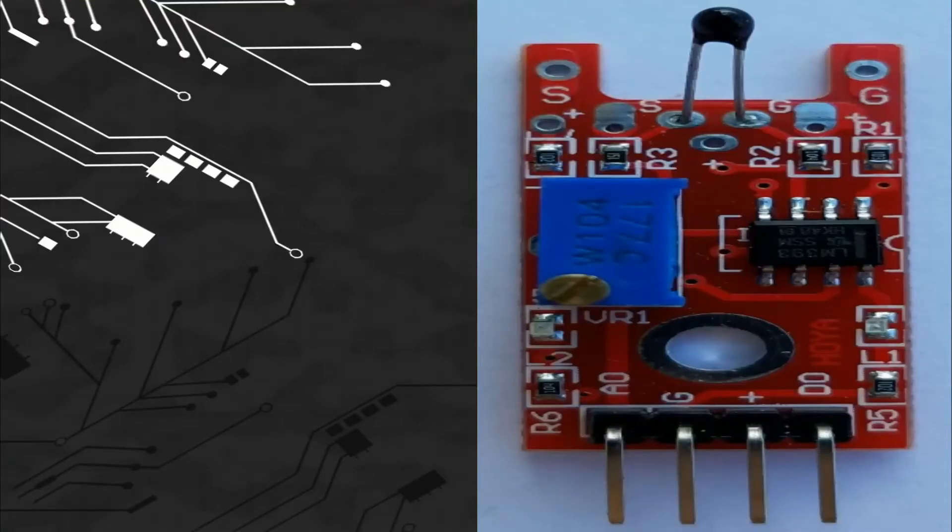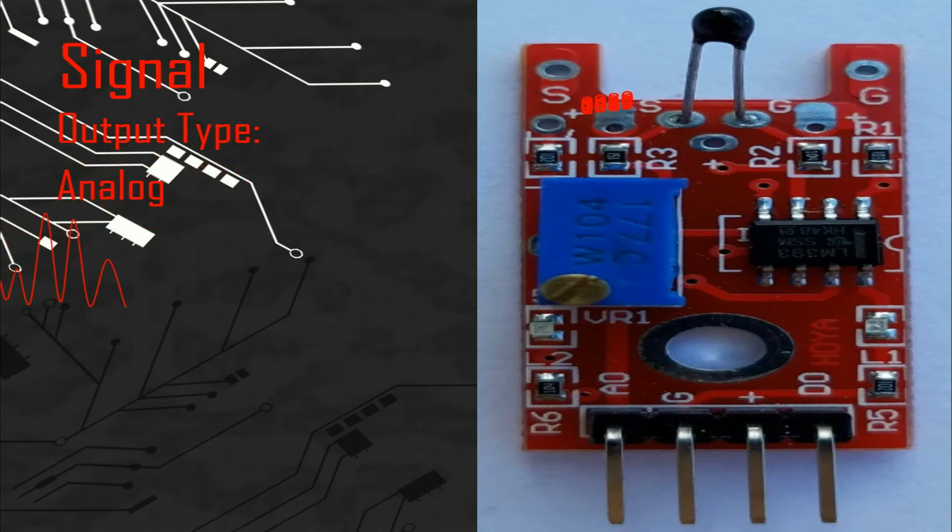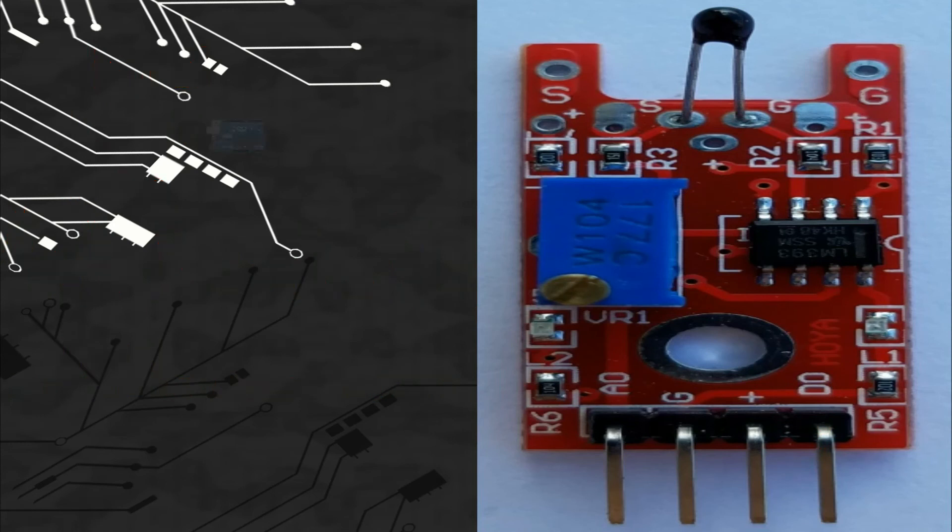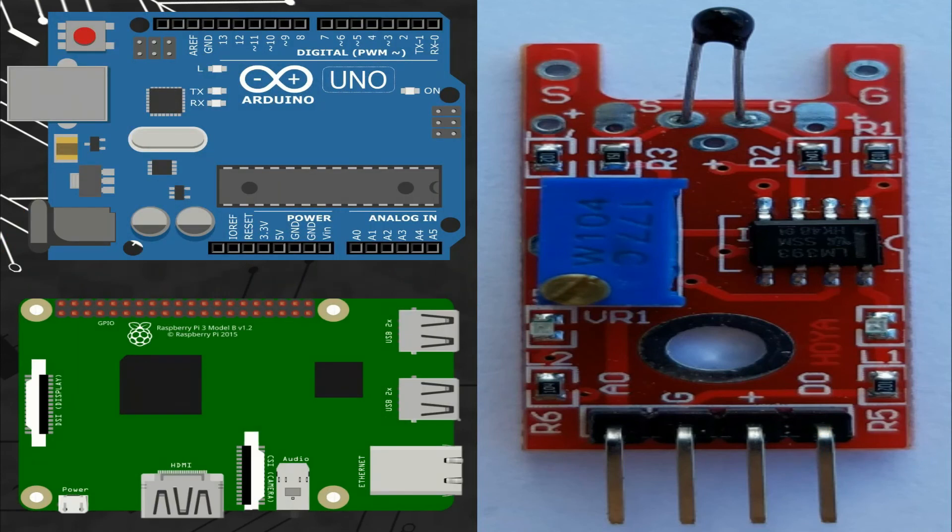So let's talk about the signal. This module gives two signals. We can connect the pin of the analog signal with any analog port and the pin of the digital signal with any digital port of different microcontroller boards like Arduino or Raspberry Pi.